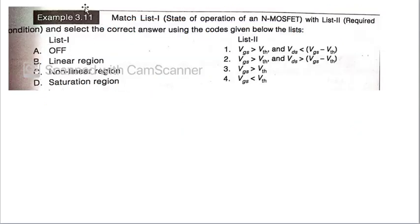In this also, we have to match list one with list two. If it is an off region, for off region, VGS is always less than VTH. Therefore, A is fourth. Linear region, VGS is greater than VTH and VDS is less than VGS minus VTH. Therefore, linear region is one. Non-linear region, we all know that VGS is greater than VTH, that is third. Saturation region, in this VDS is greater than VGS minus VTH. Therefore, second. This is how we can match these list one and list two.